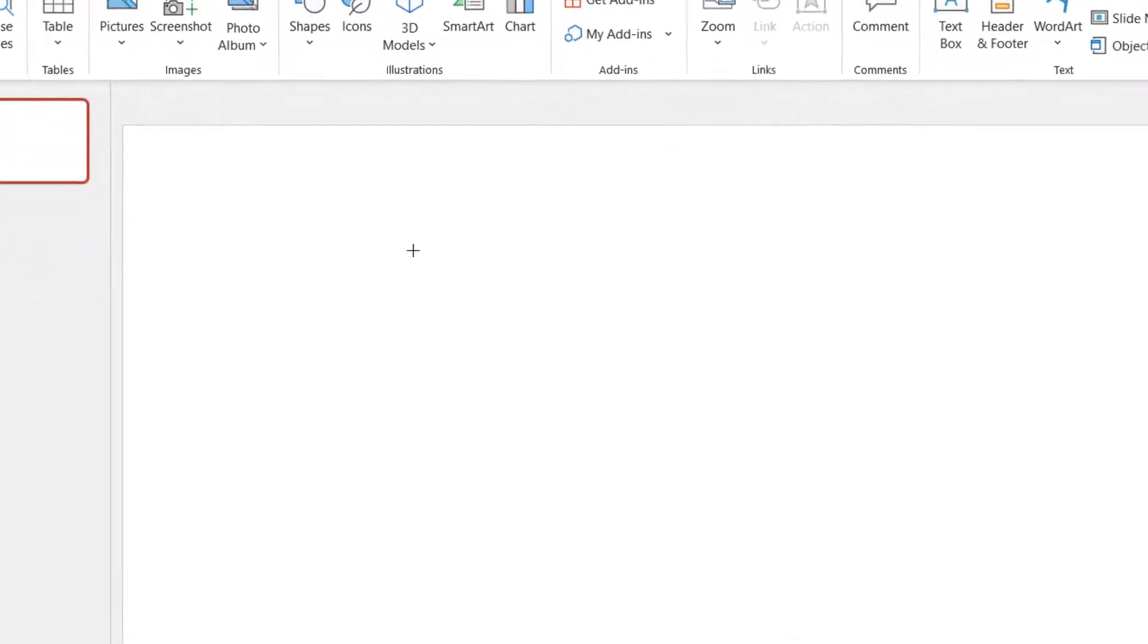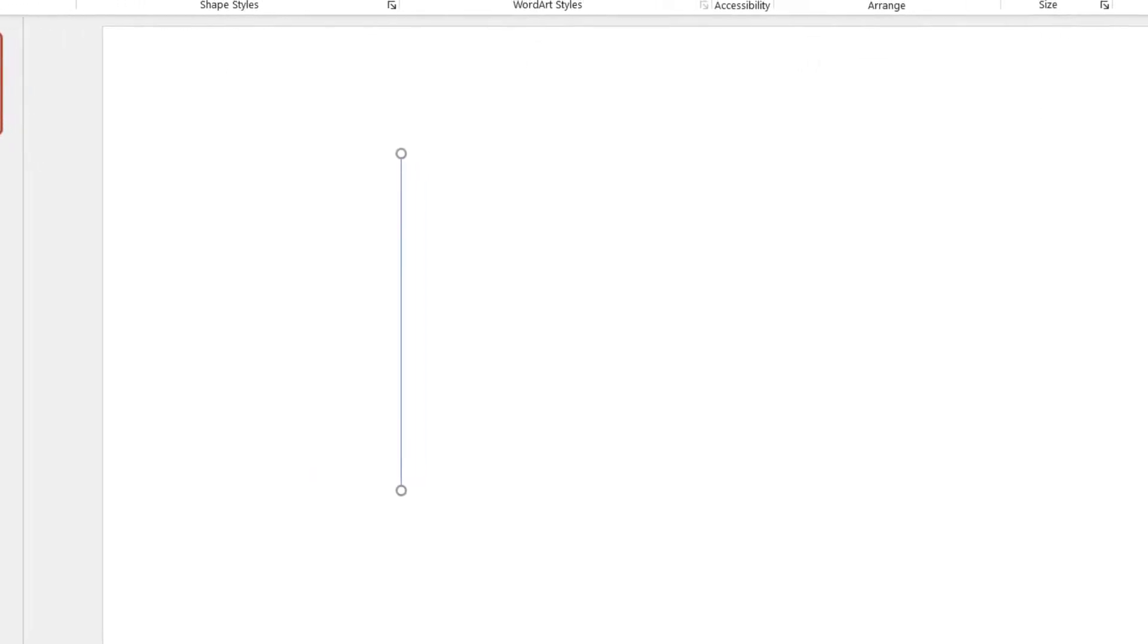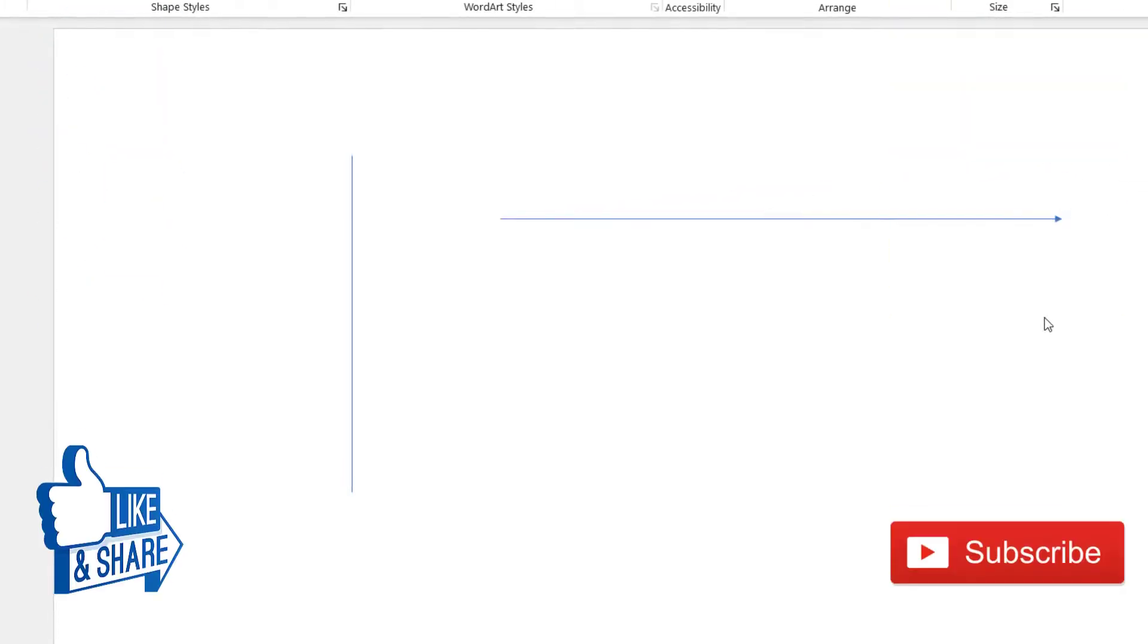The trick to draw a horizontal line is similar in PowerPoint. You go to the Insert tab, click on Shapes, select the line, drag it and press Shift to make it perfectly horizontal or vertical.